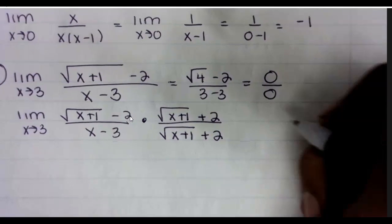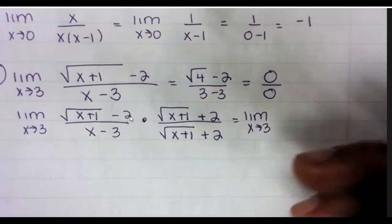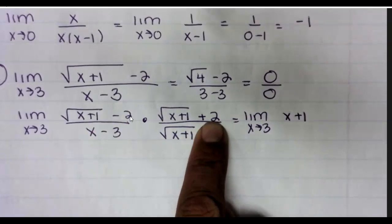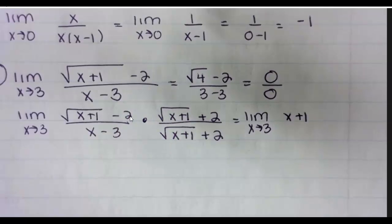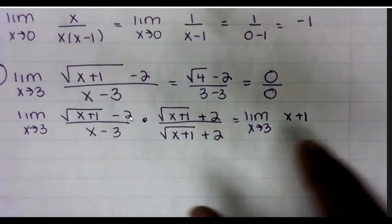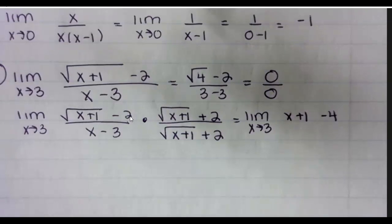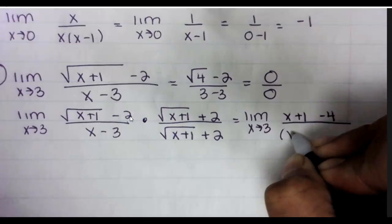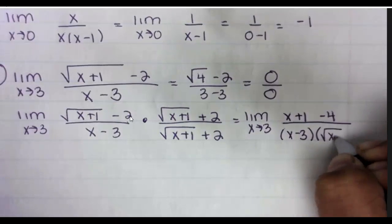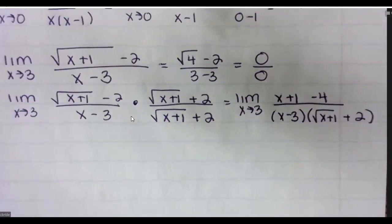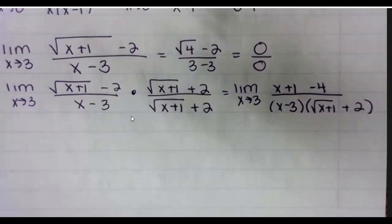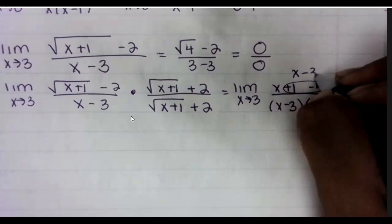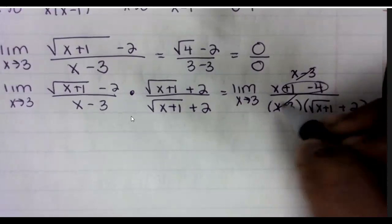The complex conjugate is the difference of squares partner to the numerator. So we're going to multiply top and bottom by square root x plus one but plus two instead of minus two. So you get the limit as x approaches three, square root x plus one times square root x plus one is x plus one. Square root x plus one times two is two square roots x plus one, but the middle is negative two square root x plus one so they cancel. Negative two times two is negative four.